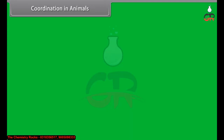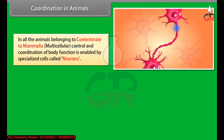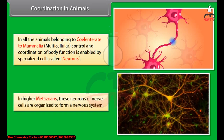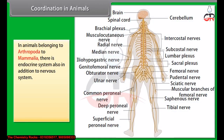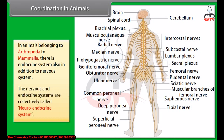In all animals belonging to coelenterata to mammalia, multicellular control and coordination of body function is enabled by specialized cells called neurons. In higher metazoans, these neurons or nerve cells are organized to form a nervous system. In animals belonging to arthropoda to mammalia, there is an endocrine system also in addition to the nervous system. The nervous and endocrine systems are collectively called the neuroendocrine system.